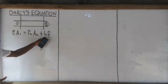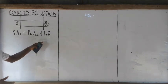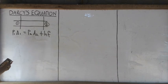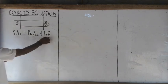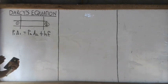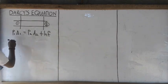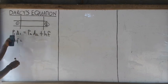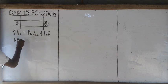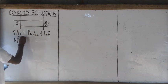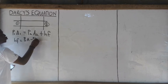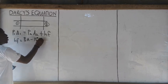We are told to derive this and we are going to make HF the subject of the formula. So I will have HF is equal to P1·A1 minus P2·A2.